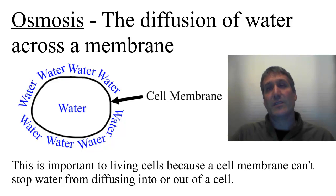This is important for a living cell because it's a big part of maintaining homeostasis. It's also important because a cell membrane can't stop water from diffusing into or out of the cell.